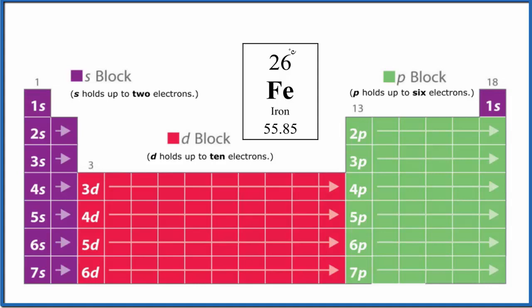Iron on the periodic table has atomic number 26. That means it has 26 protons, but it also has 26 electrons. Iron is a neutral atom, as are all the atoms on the periodic table.